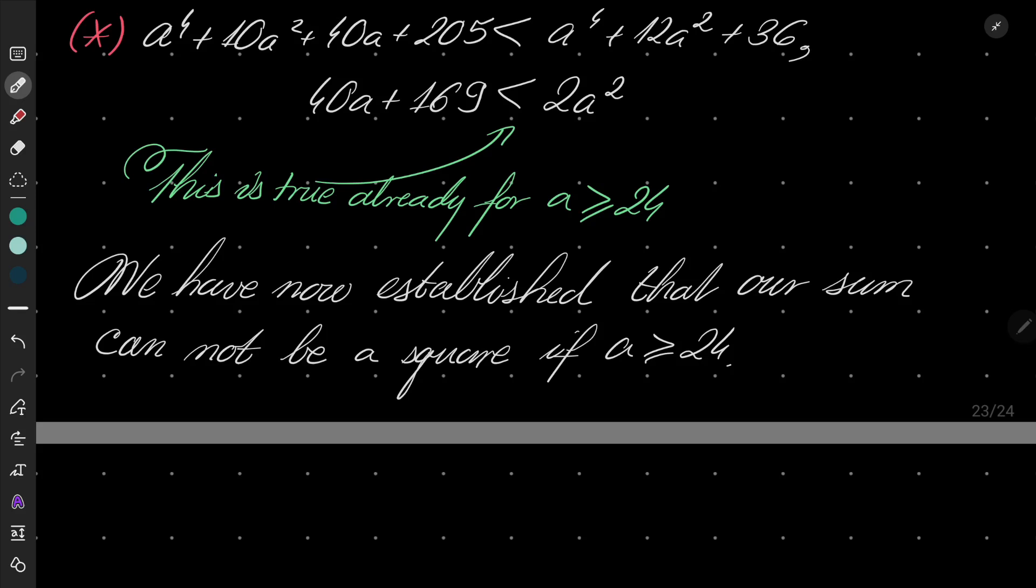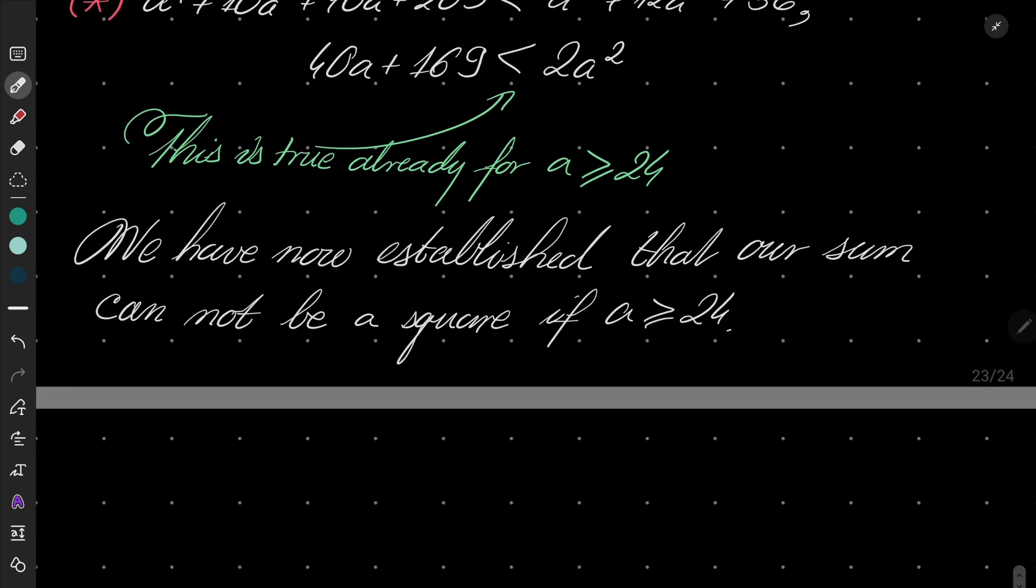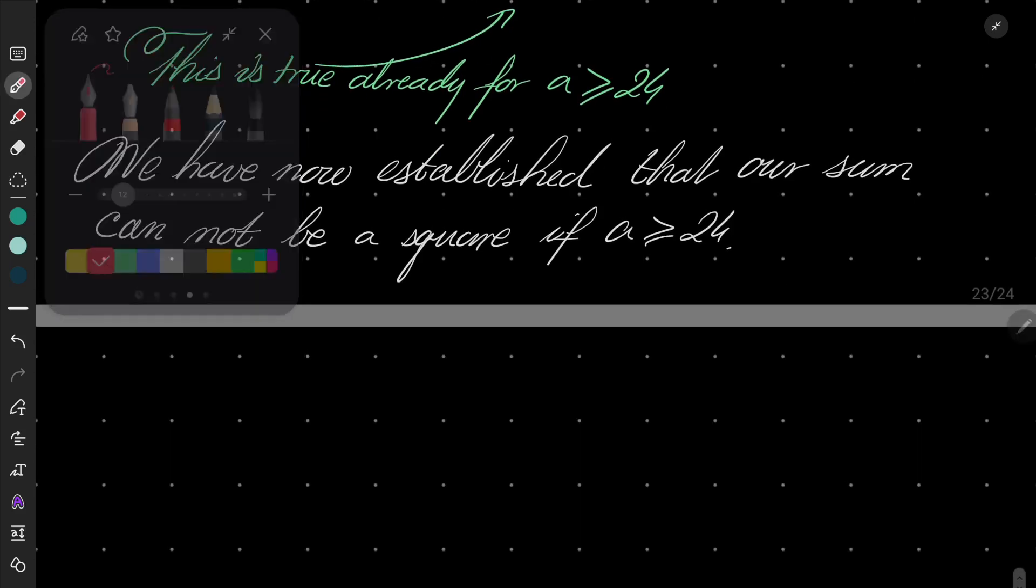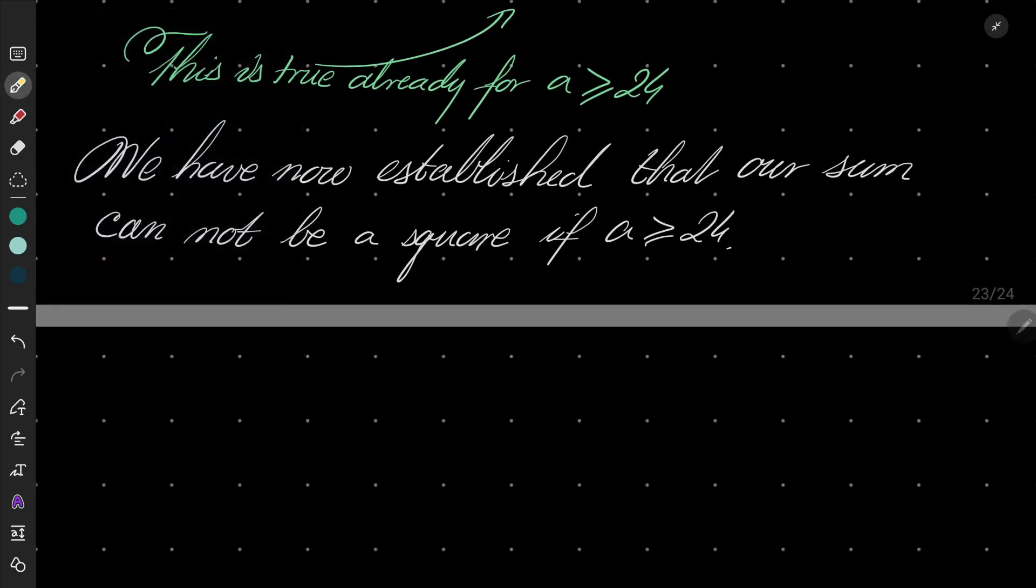Once again, why is that? Because it is strictly between two consecutive squares. And between two consecutive squares, there are no other squares.